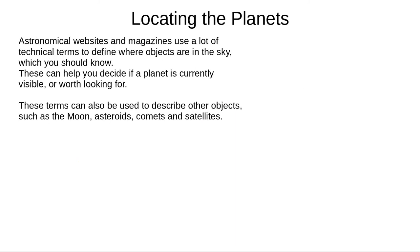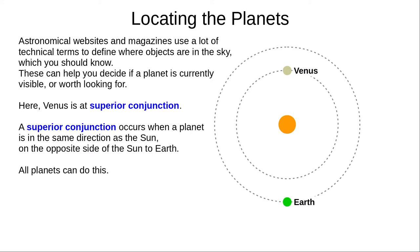In astronomy, we use a lot of technical terms to describe where astronomical objects such as planets are, and you should know what these mean. Here, Venus is at superior conjunction. This means it's in the same direction as the Sun, but on the opposite side of the Sun, so it's impossible to see Venus. All planets can be at superior conjunction.